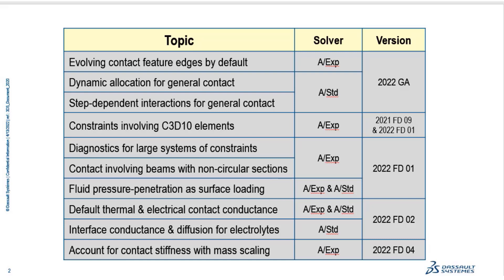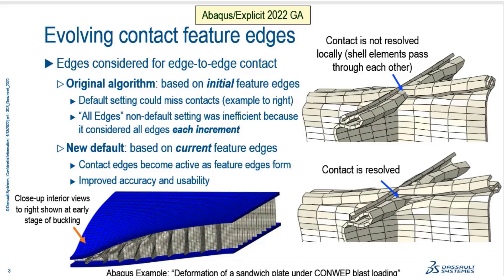The first topic is evolving contact feature edges. To give a summary: the edges considered for edge-to-edge contact in our original algorithm was based on the initial feature edges. With that approach, the default setting could miss contact. The default was to only consider the initial feature edges, so even if you gave a feature angle criteria, the initial criteria wouldn't pick up edges that form as surfaces buckle. As you can see in the figure on the top right, as buckles form, since those edges are not considered for contact where feature edges have formed, the shell elements are passing right through each other.